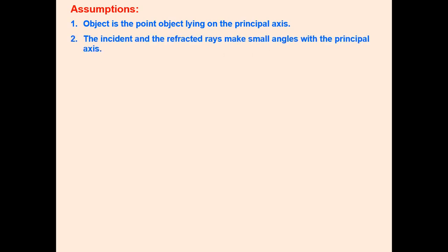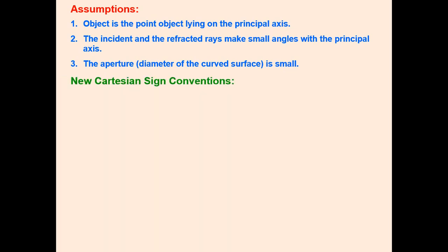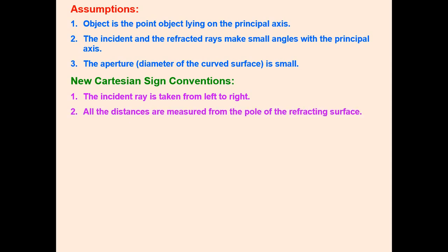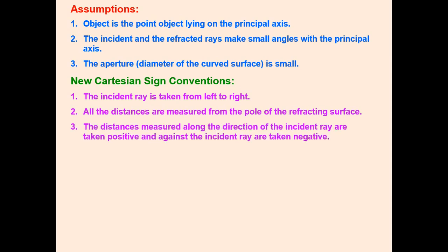The second assumption is that the incident and refracted rays make small angles with the principal axis. Third, the aperture — that is, the diameter of the curved surface — is small. For sign conventions: the incident ray is taken from left to right, all distances are measured from the pole of the refracting surface, distances along the direction of the incident ray are positive, and against the incident ray are negative.